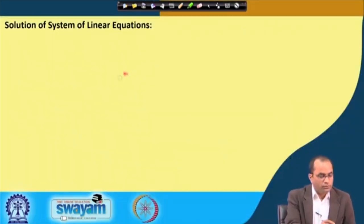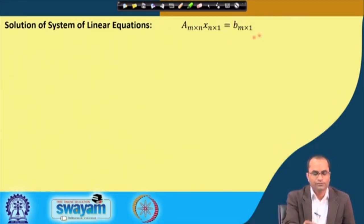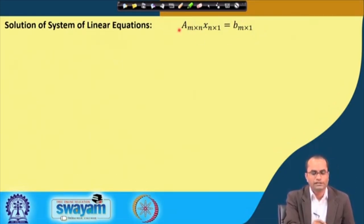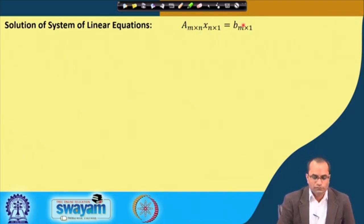Let us go back to what we have done in the previous lecture with the help of a simple example. Now we will consider a rather general example where we have matrix A with m rows and n columns, then we have x of order n by 1, and the right-hand side vector of order m cross 1.